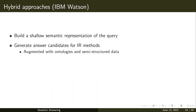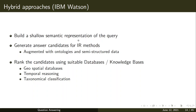Hybrid approaches combine both. IBM Watson is an example: it builds a shallow semantic representation of the query, generates answer candidates using information retrieval methods augmented with ontologies and semi-structured data, and then ranks the candidates using suitable databases or knowledge bases. So it is a two-step process — IR-based methods yield answer candidates, which are then ranked using knowledge bases.